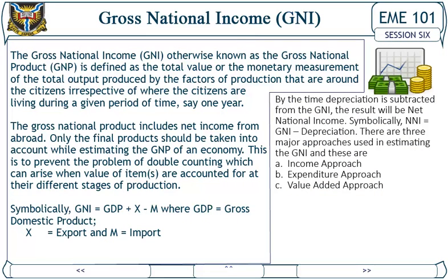Gross National Income (GNI): The gross national income, otherwise known as the gross national product (GNP), is defined as the total value — or the monetary measurement of the total output — produced by the factors of production that are owned by citizens, irrespective of where the citizens are living, during a given period of time such as one year. The gross national product includes net income from abroad. Only the final product should be taken into account while estimating the GNP of an economy, to prevent the problem of double counting, which can arise when the value of items is accounted for at their different stages of production.